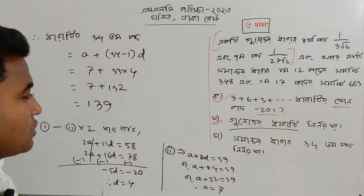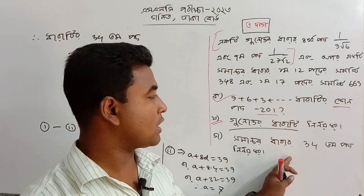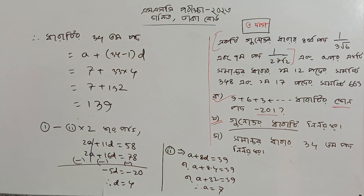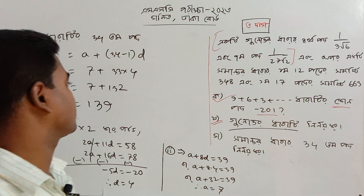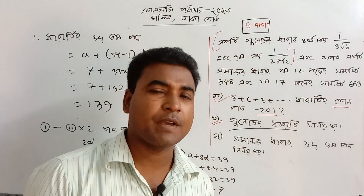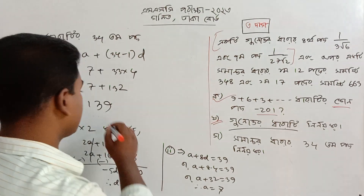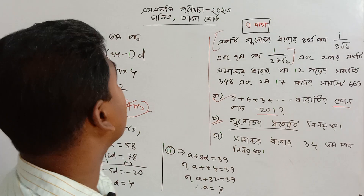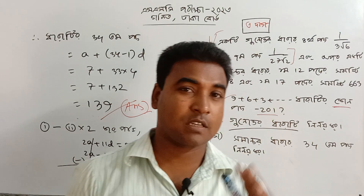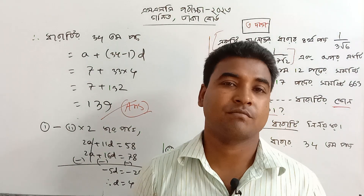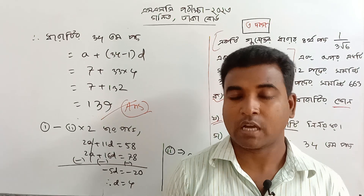Carefully. So the number of three is the number of three. You can tell that the number of three is very easily. If you say this, then you will be strong. Thank you.